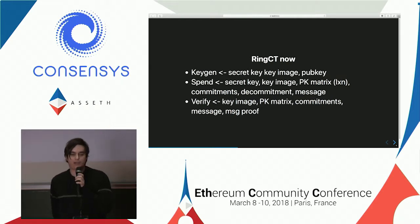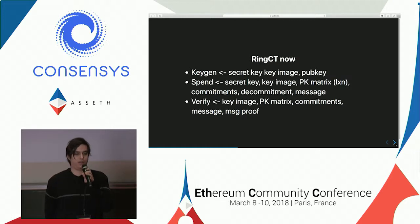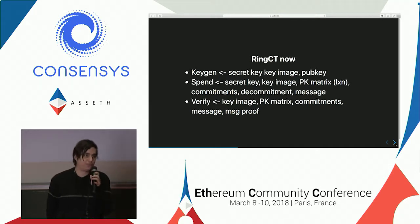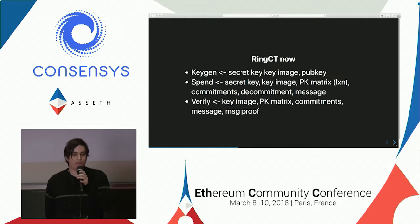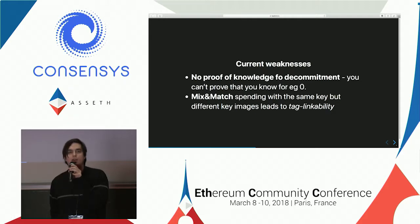RingCT now has three algorithms: key generation — basic stuff — producing a key image and a public key; a spending algorithm that outputs a spend signature from the secret keys, the key images, and the matrix we talked about; commitments that you know an entire column of this matrix, and the commitment that can open it up — this is the trapdoor in this cryptographic scheme — plus the message you want to provide. And of course, a verification for all these inputs. The current weakness, besides scalability, is that we currently need O(L × N) size of proofs.